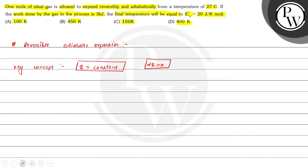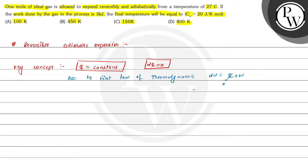Now we can use the first law of thermodynamics. According to the first law of thermodynamics, DU is equals to Q plus W. Here this value Q is equals to 0, so we can write DU is equals to W.